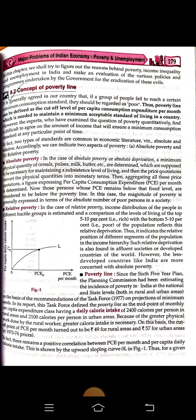In the case of relative poverty, the income distribution of people in different fractiles or groups is examined — specifically a comparison of the levels of living of the top five to ten percent (the rich) with the bottom five to ten percent (the very poor). This reflects relative deprivation. Relative deprivation is also found in affluent or developed countries, however less developed countries like India have more concentrated absolute poverty.